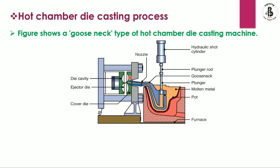You can see the fixed die and the movable die. In the case of the movable die, it also has built-in ejector pins. The whole die is made with metallic materials, sometimes steels or alloying materials. In between the two halves is the mold cavity, whose shape and size can be set as per requirements.